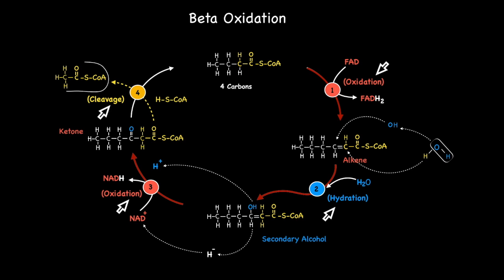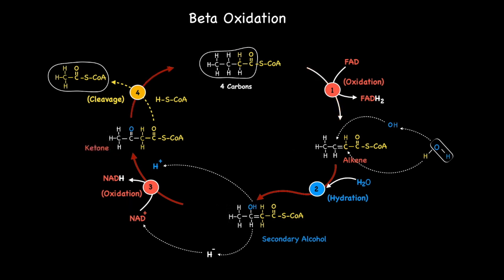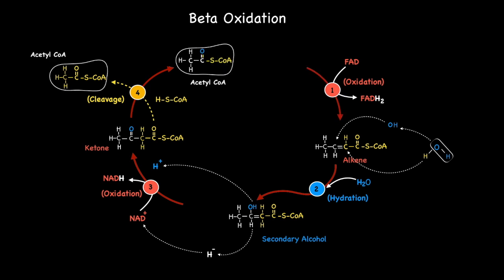This results in the production of another acetyl CoA in addition to the 4 carbon fatty acyl CoA product. The cycle repeats again undergoing the same steps in the same sequence. This results in the production of two acetyl CoAs.